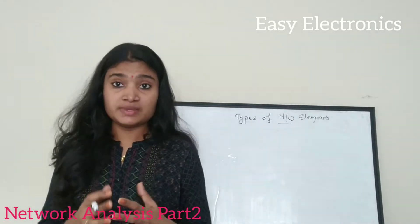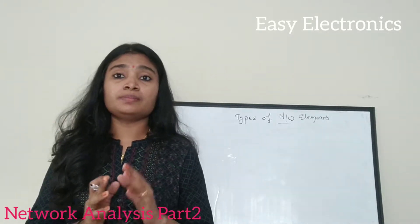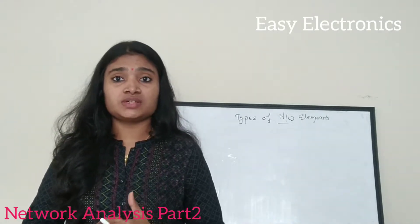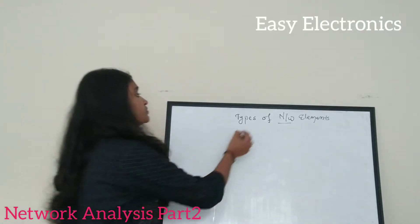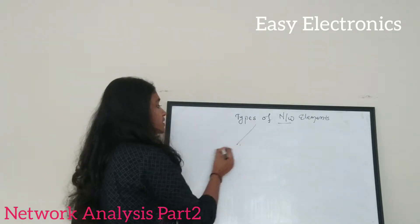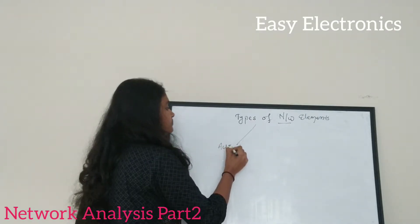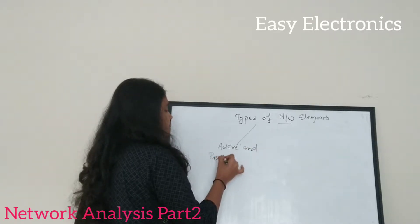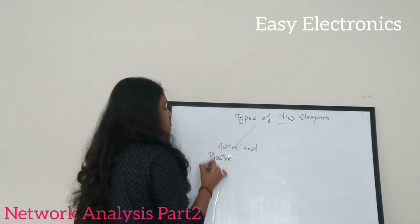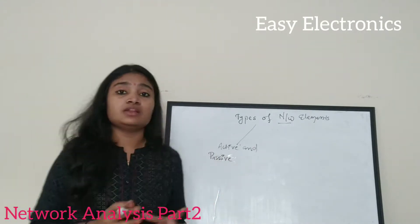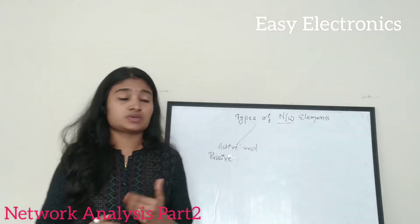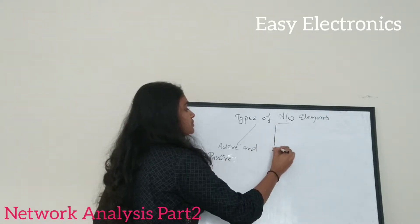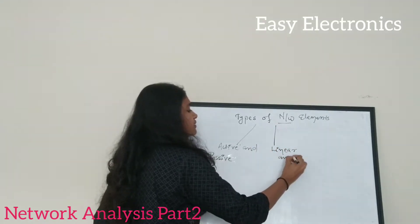There are broadly three categories of elements present in an electrical network. The first category is active and passive elements. The second classification is linear and non-linear elements.